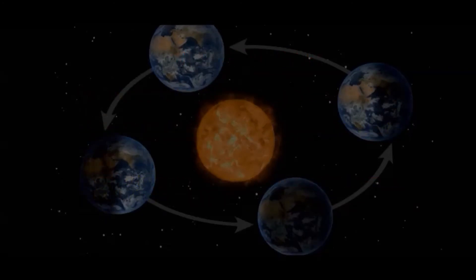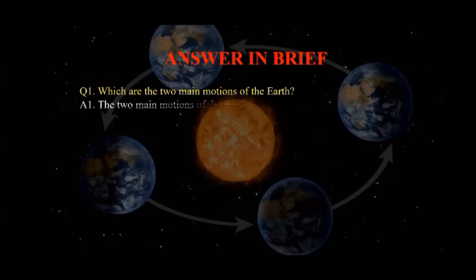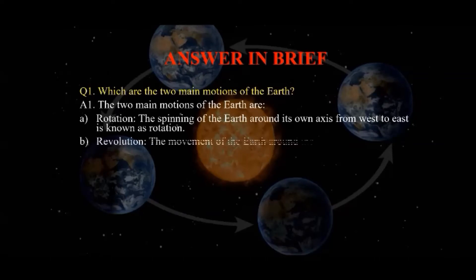Now let's answer a few questions. Number one: which are the two main motions of the Earth? The two main motions of the Earth are rotation and revolution. Rotation — the spinning of the Earth around its own axis from west to east — is known as rotation. The movement of the Earth around the Sun is called revolution.